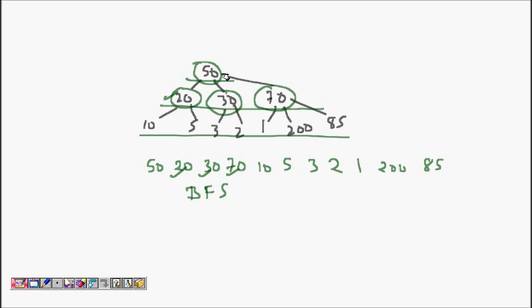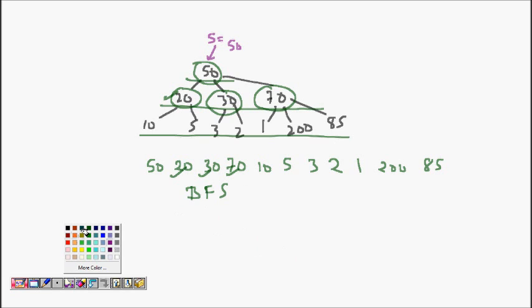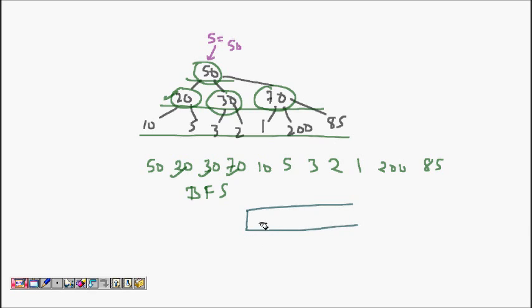In breadth first search, I start from a source node — say node 50. I maintain a queue. Initially I insert the source node 50 into the queue. Then I dequeue it, mark it as visited, print it, and process its neighbors.